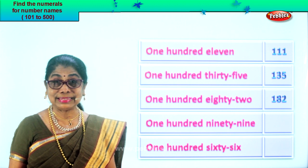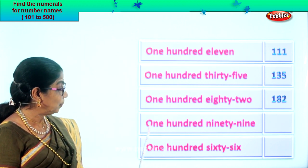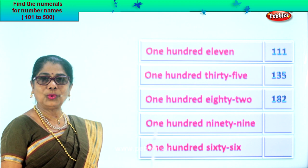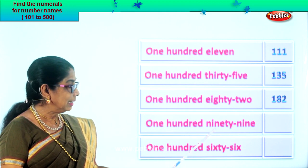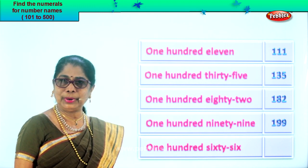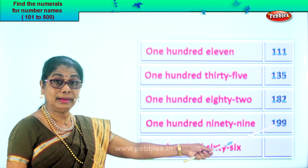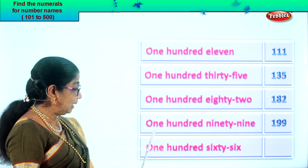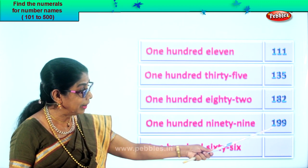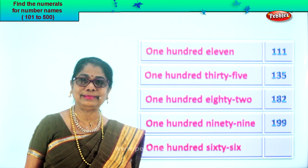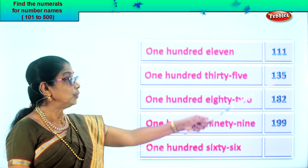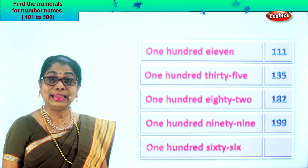Shall we look at the next number name? One hundred ninety-nine. One in the hundredth place, ninety-nine — nine in the tens place, nine in the ones place. Now let's write down: one hundred ninety-nine. Both the numeral and number name should be the same. Reading aloud, you will not make a mistake. So you have done the numeral correctly.